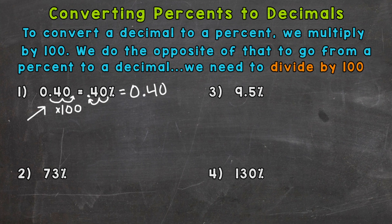So all you need to do is divide by 100 to go from percent to decimal. So number two, we have 73%. So we would need to move the decimal twice to the left, which is the same as dividing by 100. One, two. So our decimal would be 73 hundredths.